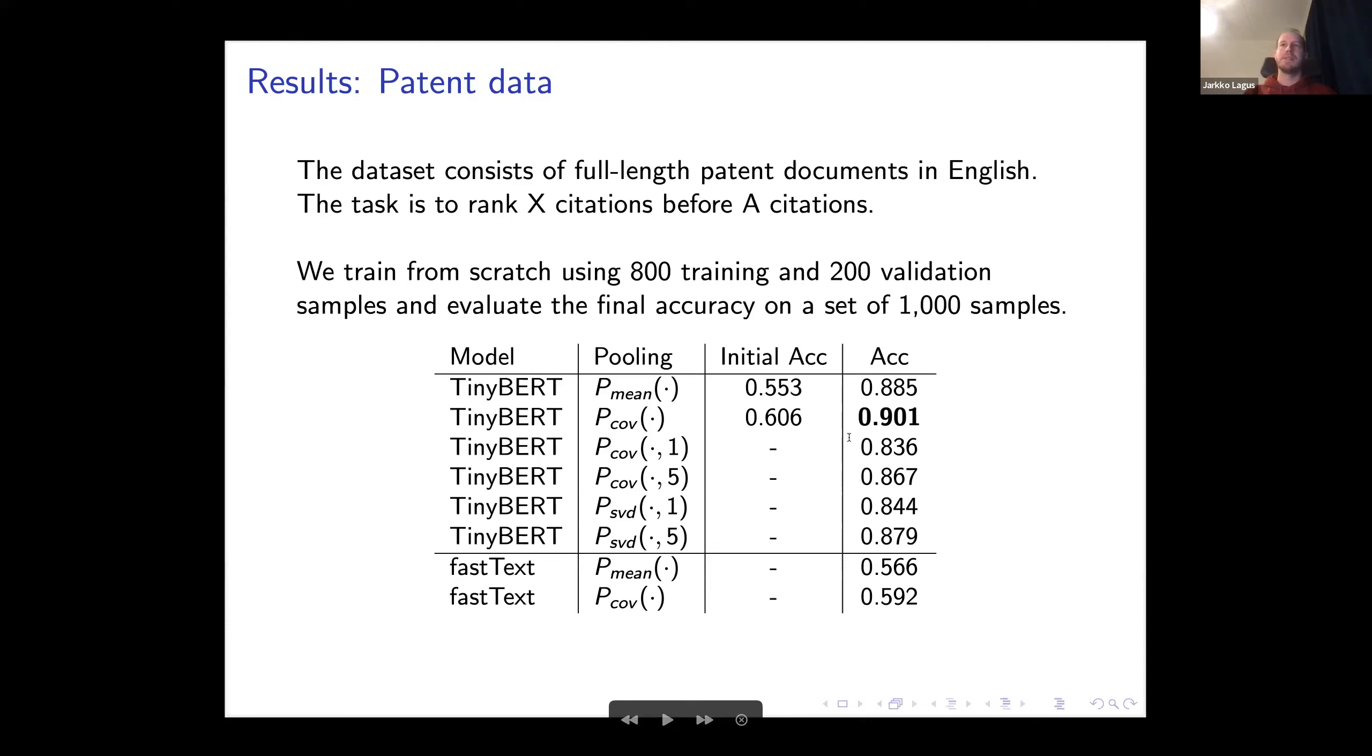Here again, the same effect happens. The covariance representation is the best version. Interestingly, the mean is actually second and not very far from the covariance, so this could go within the statistical sense just by random chance. We see that again, the static embedding based models are much, much further away from the scores of these transformer models.